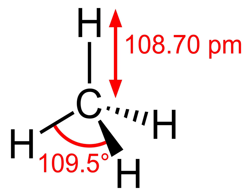The Earth's atmospheric methane concentration has increased by about 150% since 1750, and it accounts for 20% of the total radiative forcing from all of the long-lived and globally mixed greenhouse gases.